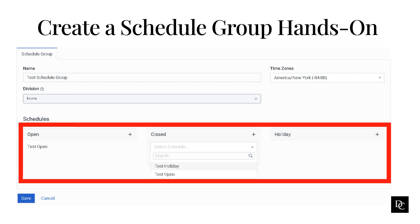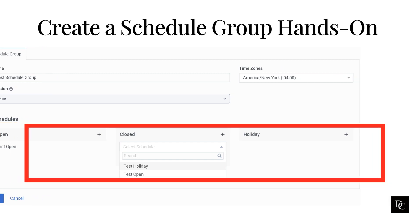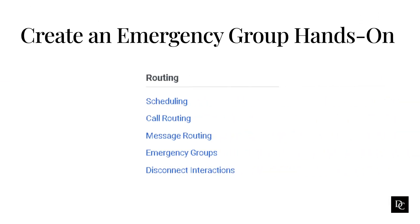Next, we are going to wrap up schedule creation by walking through creating an emergency group. Create an emergency group and associate it with a call route to quickly and efficiently turn on routing functionality that modifies call routing behavior during unplanned or semi-planned critical events, such as fire, natural disasters, and power outages.